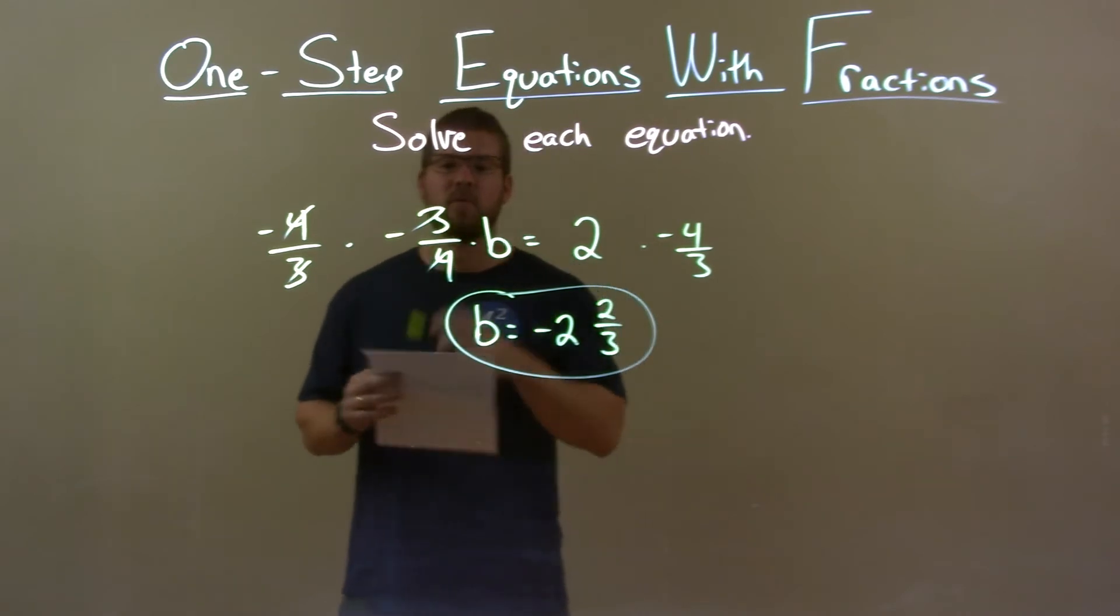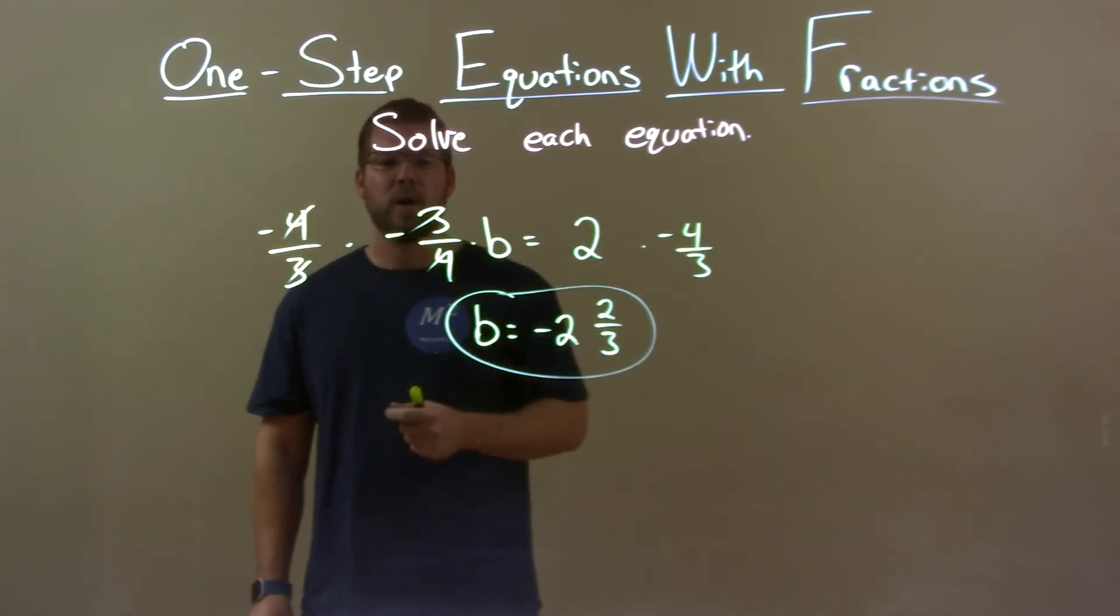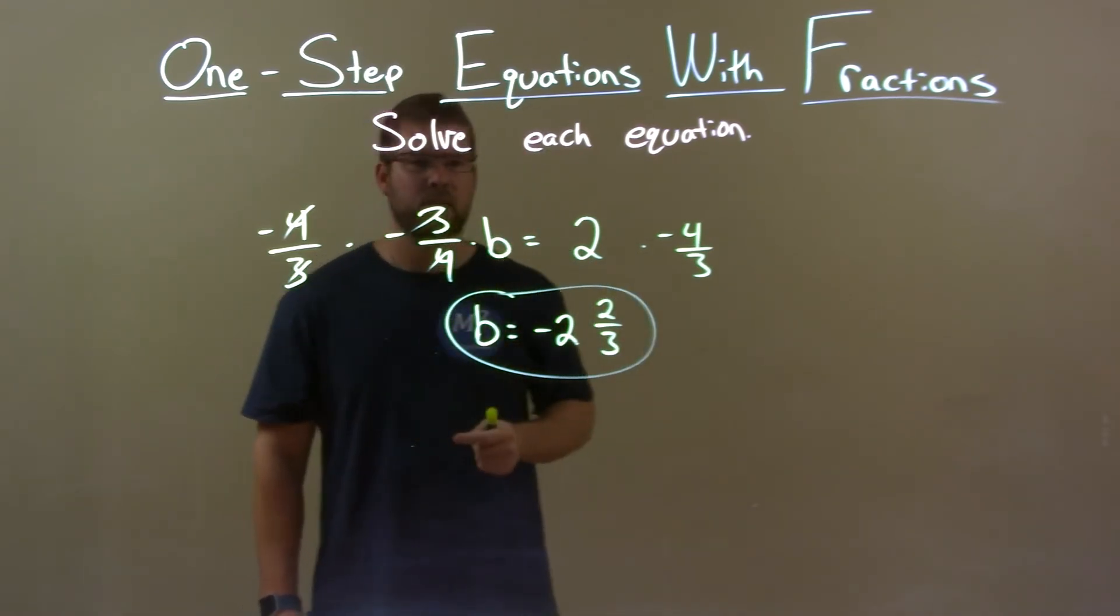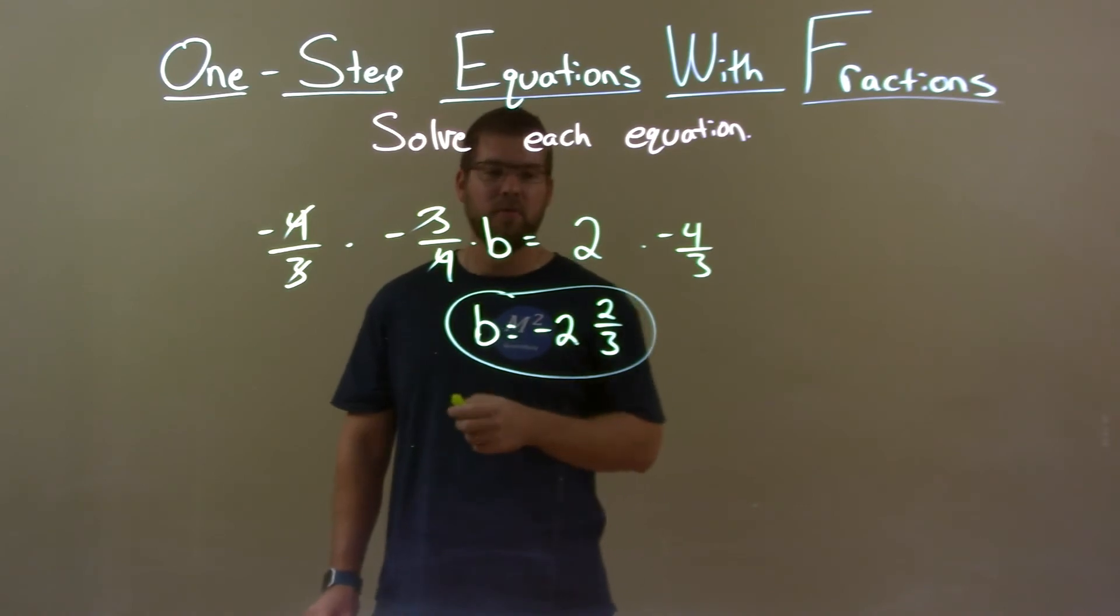Quick recap. We're given negative 3 fourths times B equals 2. And we got to solve for B. I multiplied both sides by negative 4 thirds. We get B by itself. And after simplifying, our final answer is just negative 2 and 2 thirds.